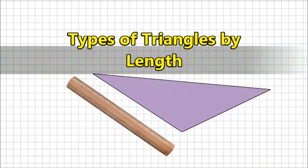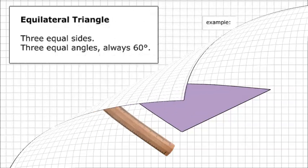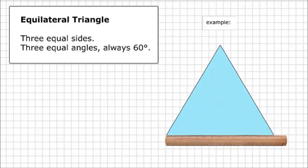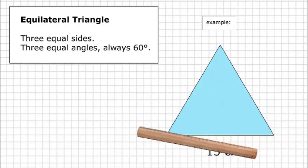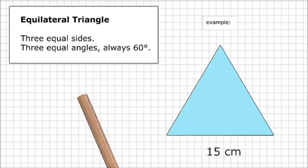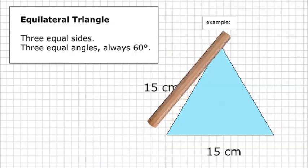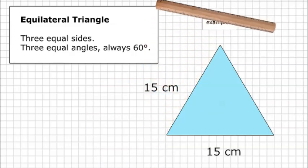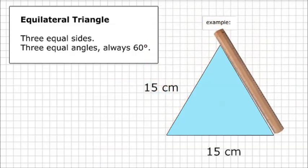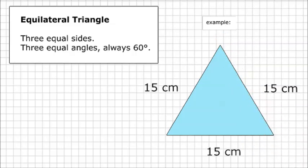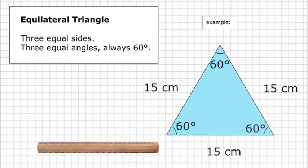Types of Triangles by Length. Equilateral Triangle: It has three equal sides and three equal angles, always 60 degrees.